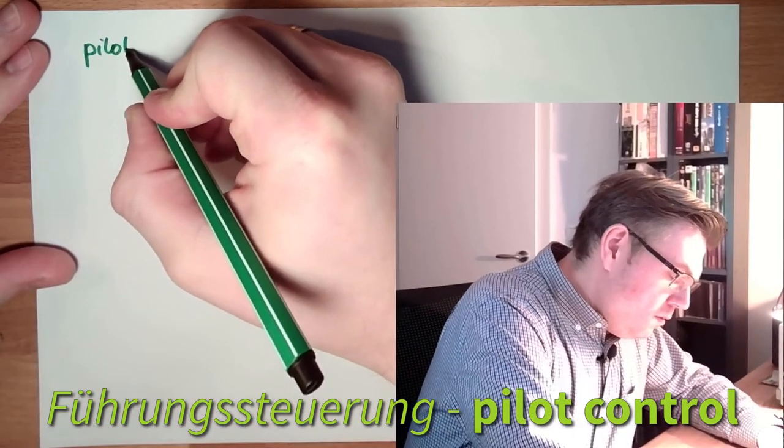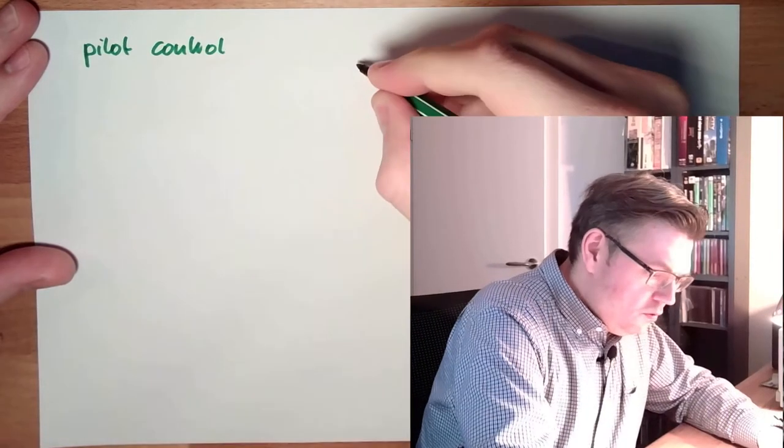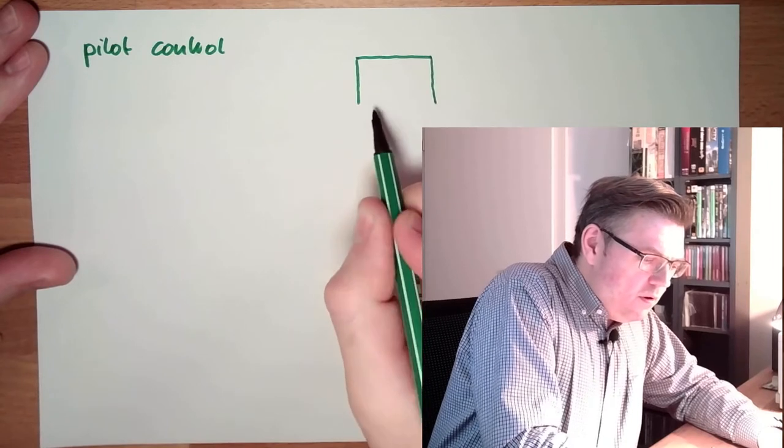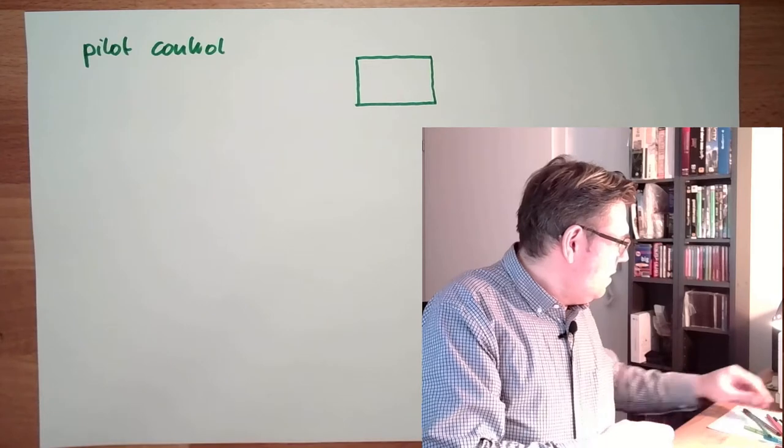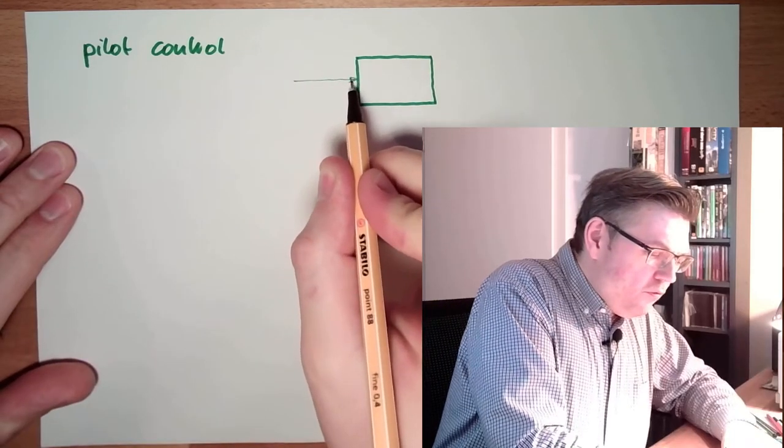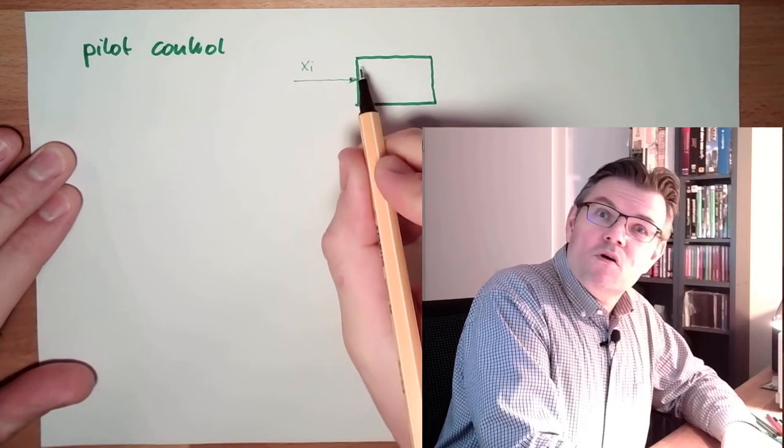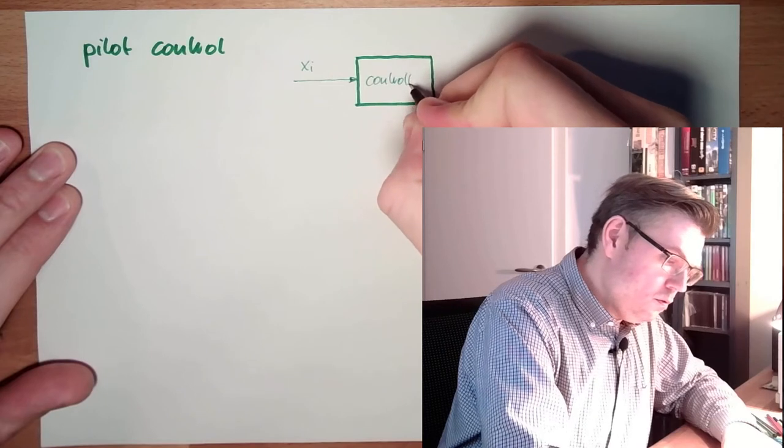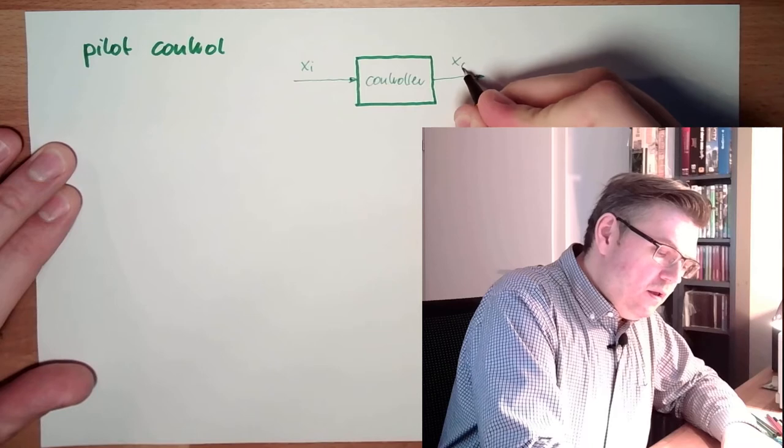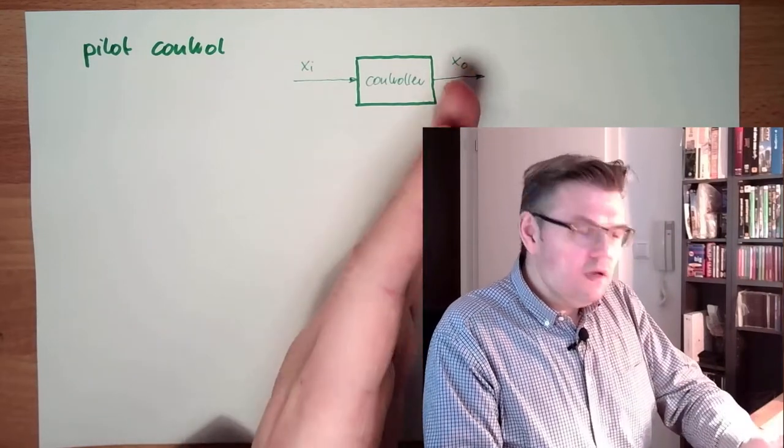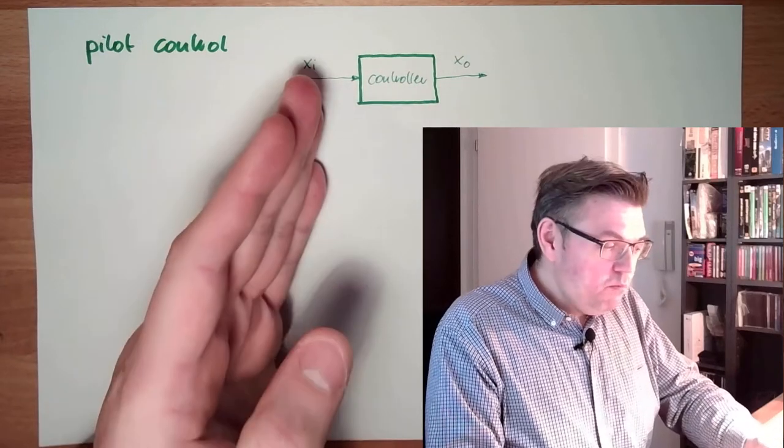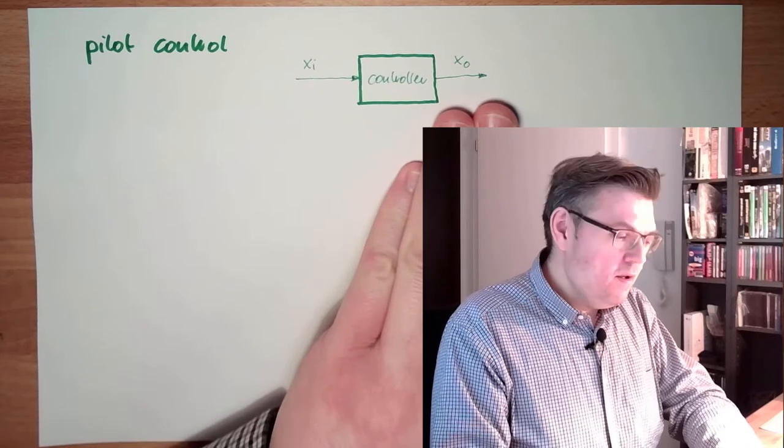So we have a control. This control belongs to a certain control type. There are different complexities. The most simple control system is the so-called pilot control. So if there is our control system somewhere, there is an input signal, and from this input signal through whatever control law, this is the controller, the output signal is determined. So the output signal directly depends on the input signal. The input signal is piloting the output signal. This is why this is called.